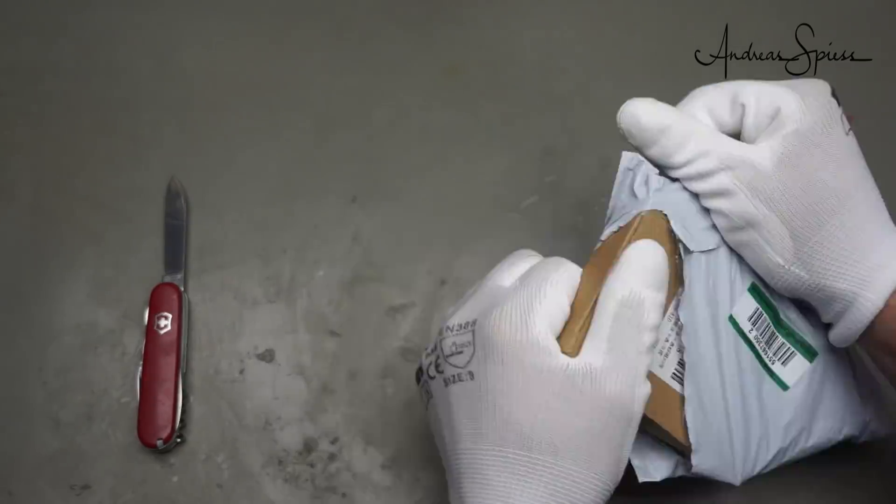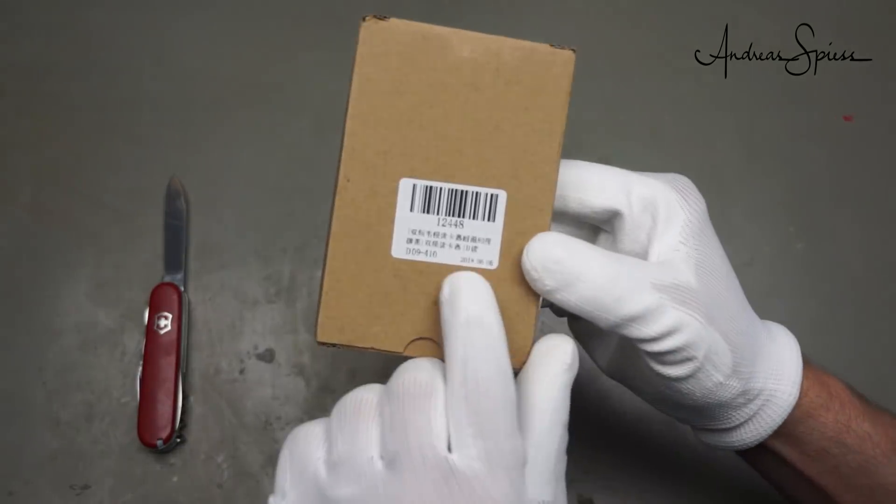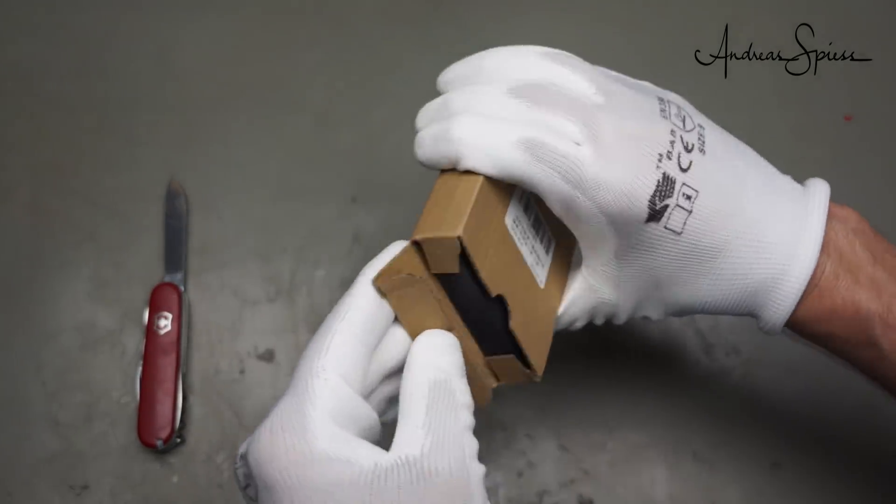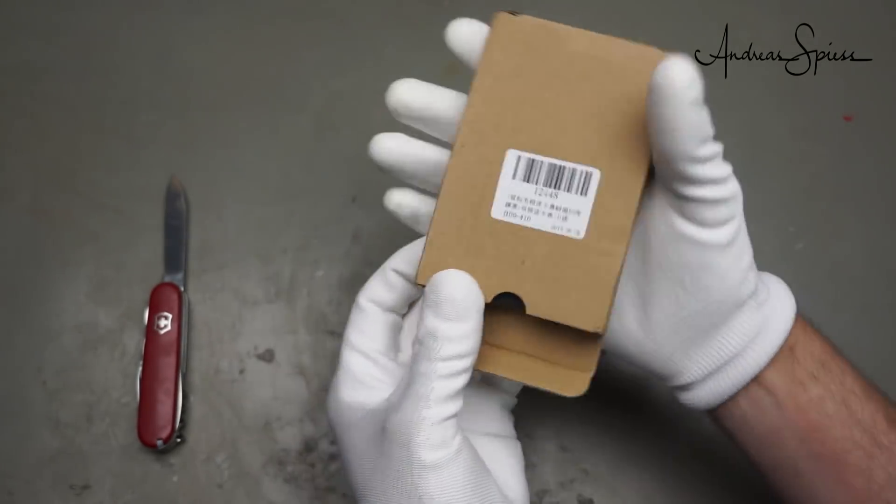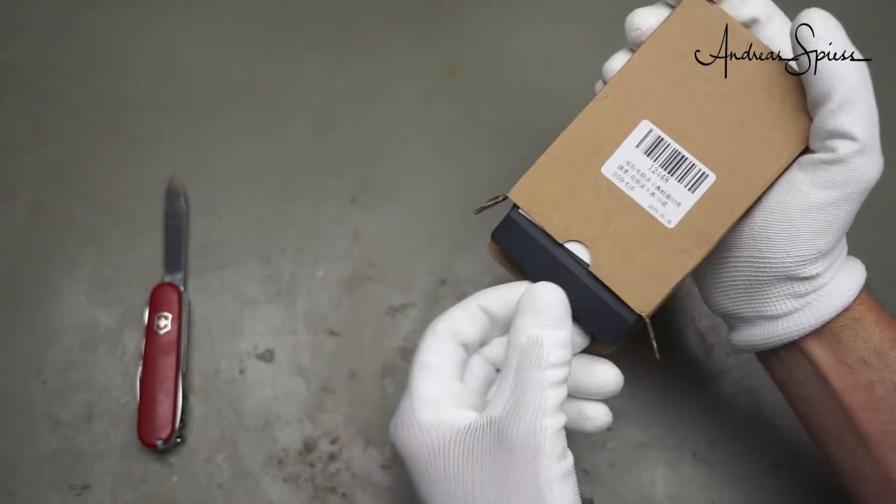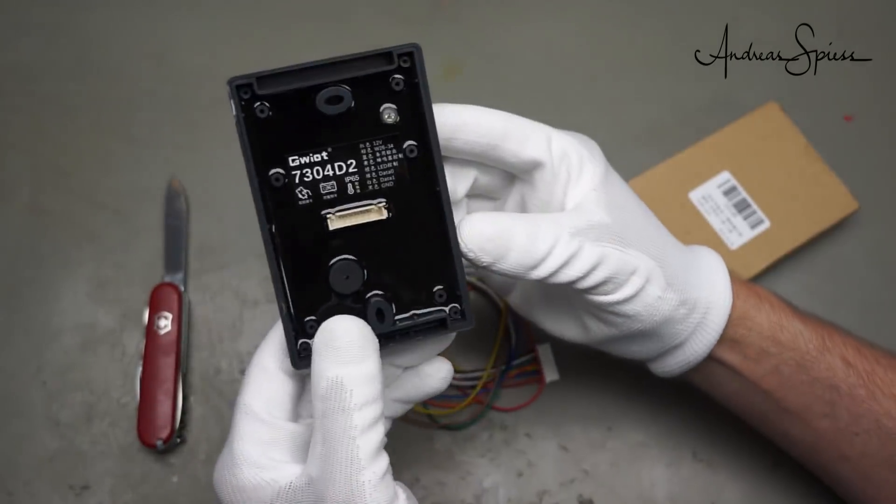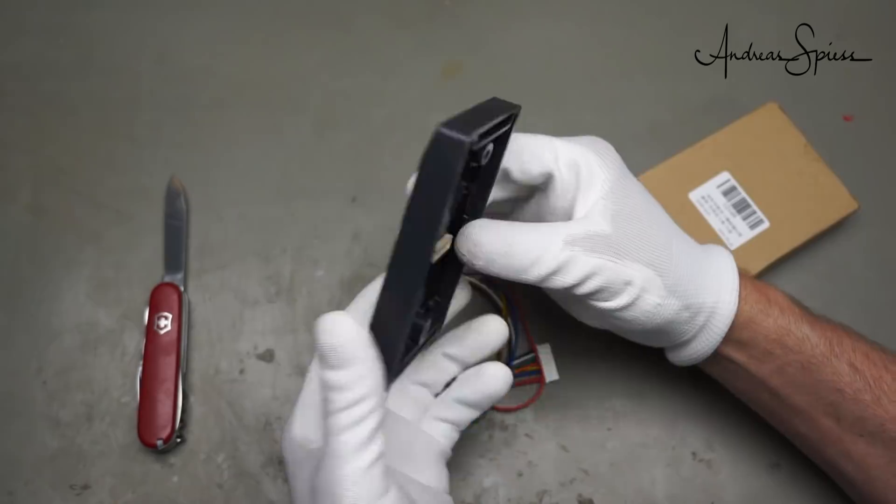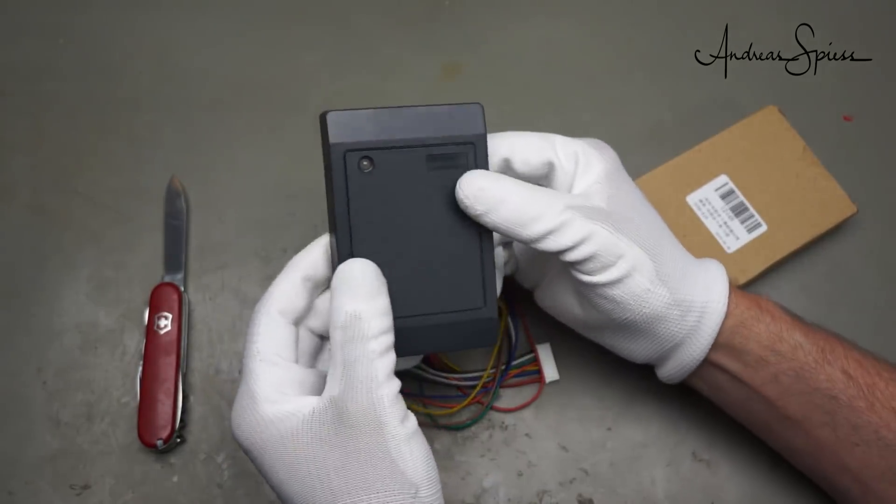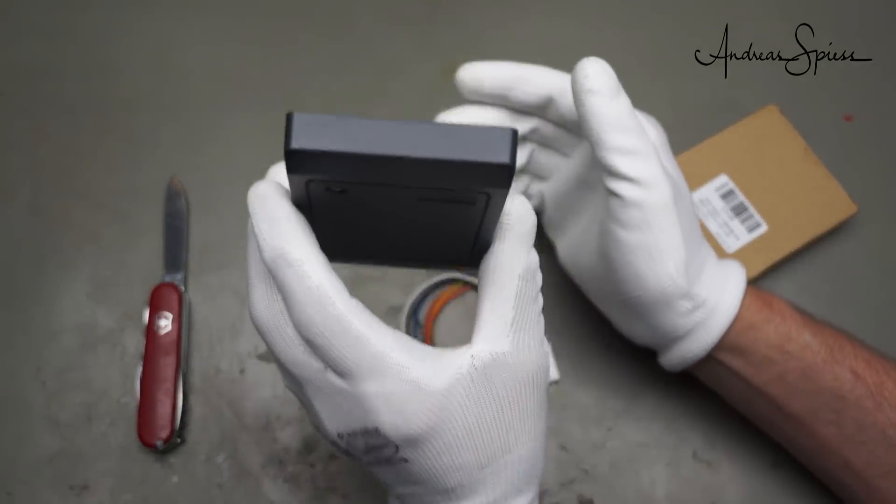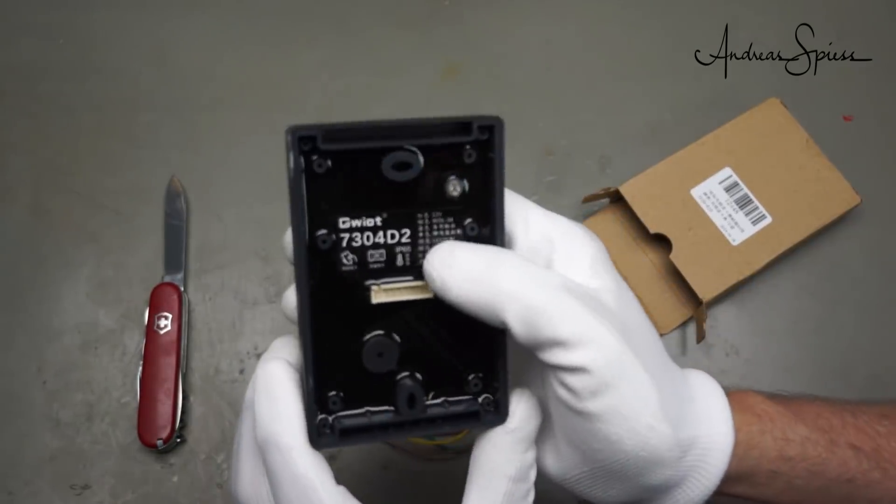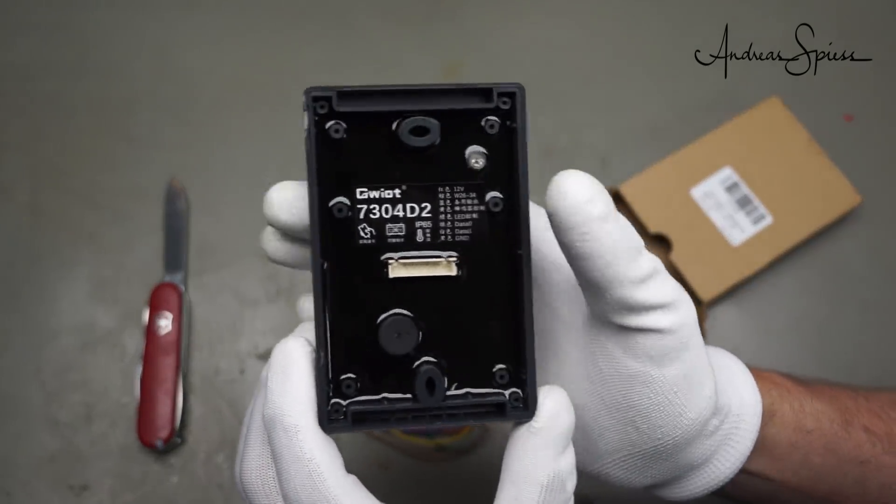Next one. Even the date is written on it. 6th June 2018. But no clue what's inside. A similar thing I think than before. Also a RFID reader to be mounted to a wall.